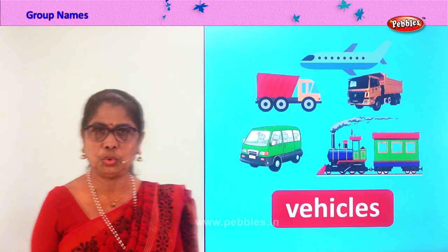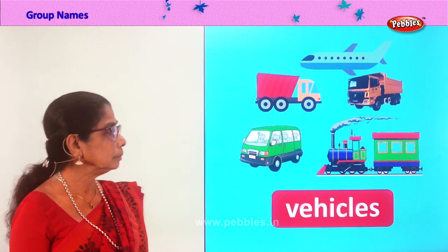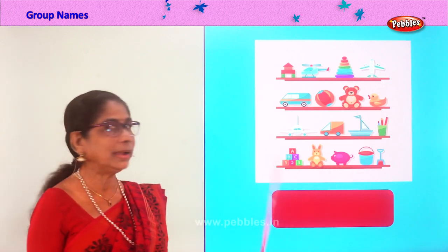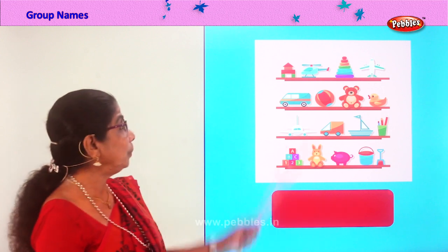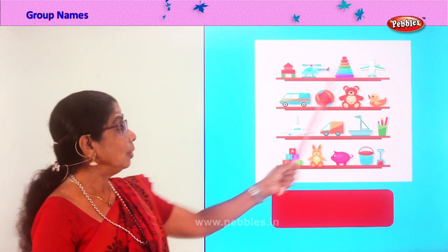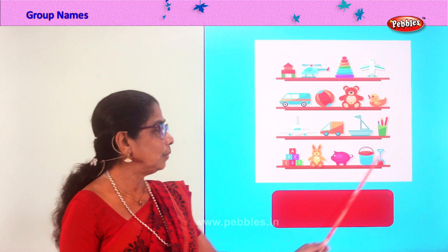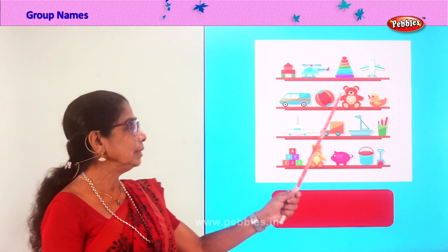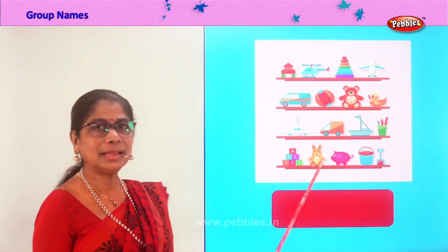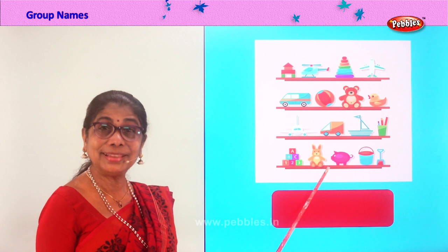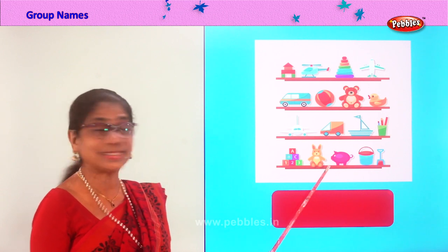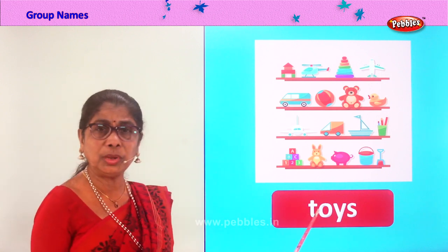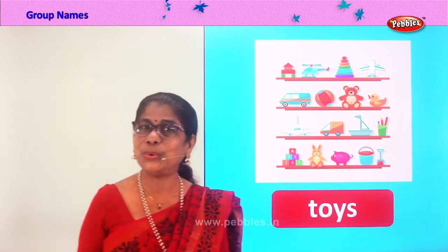Let's look at another group. In a lovely shop you find all this stuff — what do you like? What is the group name you will give? Toys! You like to pick toys from a toy shop. Spell toys: T-O-Y-S.